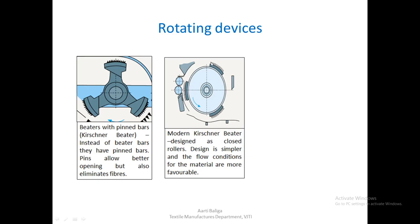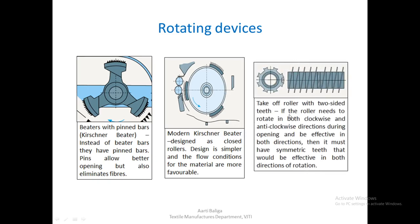One may also have six bars all over the circumference of the beater. There is another rotating device known as the takeoff roller with two-sided teeth. In certain situations the roller needs to rotate in both clockwise and anticlockwise directions during opening. In that case, it must have symmetric teeth effective in both directions of rotation. This kind of teeth is more favorable when such a situation arises in any of the blow room machines.